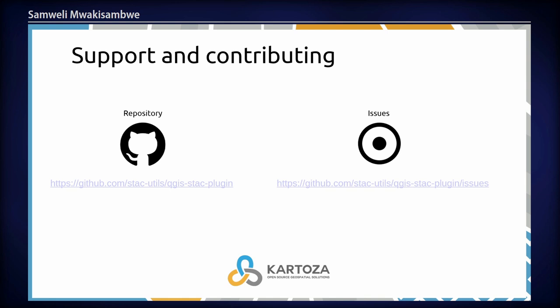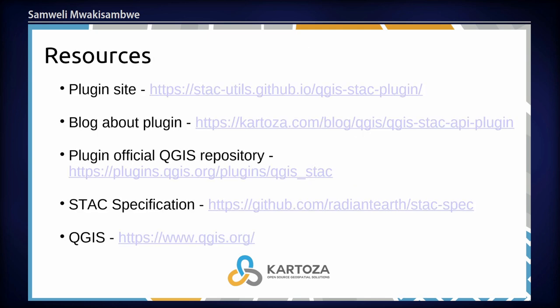The plugin is released on the QGIS official plugin repository and it's also available on GitHub. If you use it and have some issues, those are the links you should visit. One important thing about this plugin is that it fills the gap of users having to go to each different provider — instead, you just use this plugin to download data from different STAC catalogs and immediately do analysis inside QGIS. These are the resources available: the plugin site, an official blog about the plugin, the STAC specification link, and the QGIS website for those who are new to QGIS.